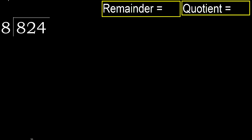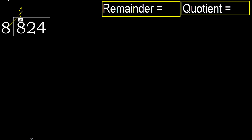824 divided by 8. 8 is not less, therefore start with 8. 8 multiplied by which number is nearest to 8 but not greater? 8 multiplied by 2 is 16, which is greater. Multiply by 1 is 8, which is not greater. Subtract: 8 minus 8 equals 0.